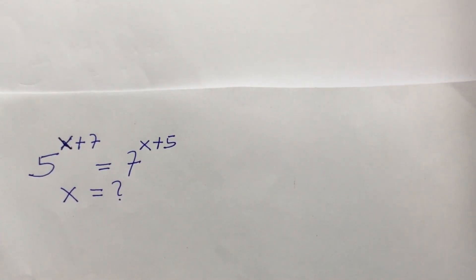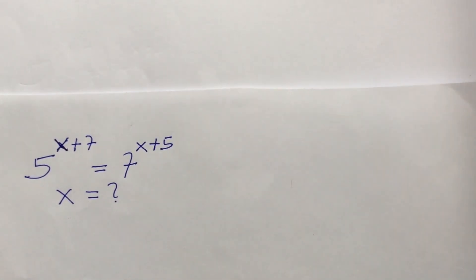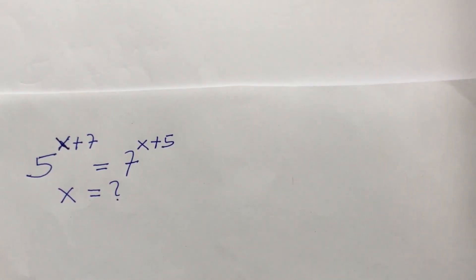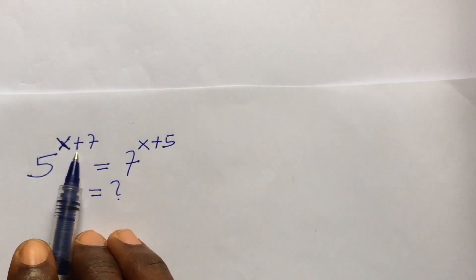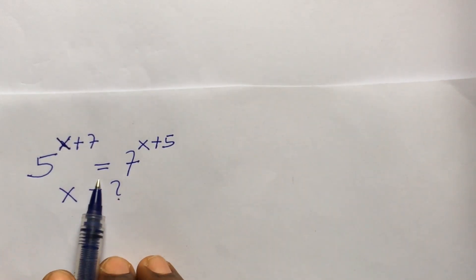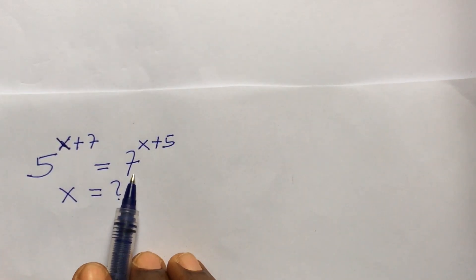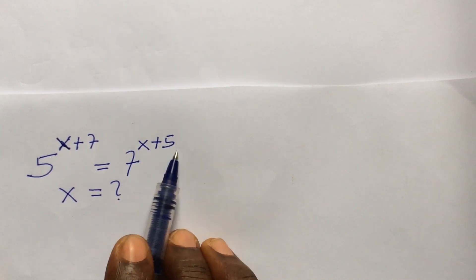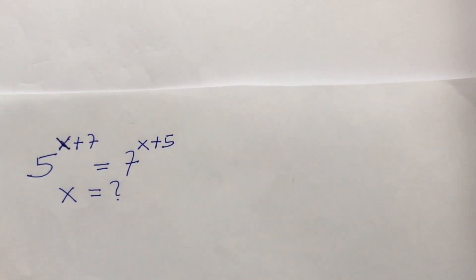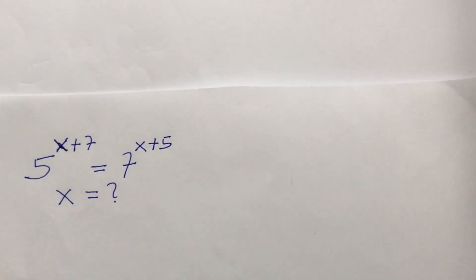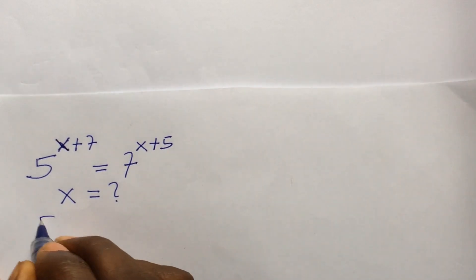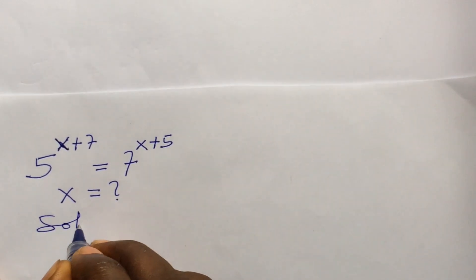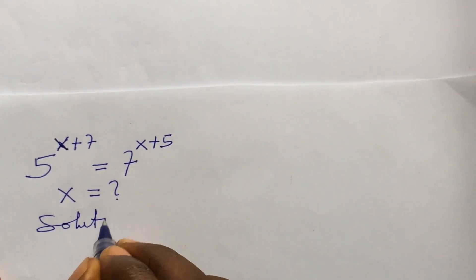Welcome everyone to my channel. Today we have a very nice exponential challenge. The question reads: 5 to the power of x plus 7 equals 7 to the power of x plus 5. What will be the value of x? Without much waste of time, let's take our solution.